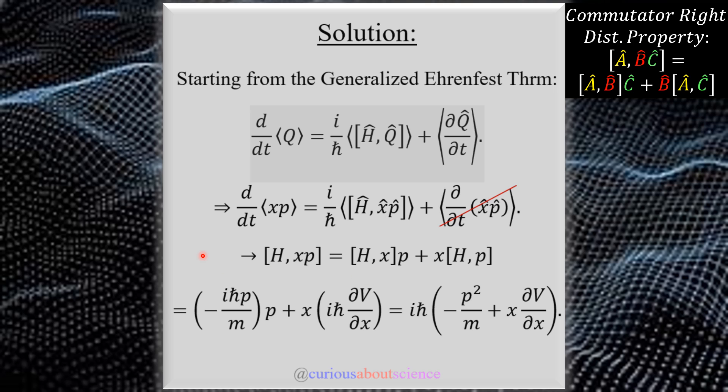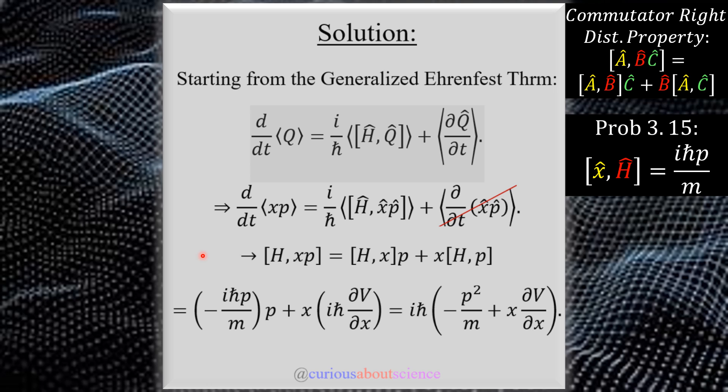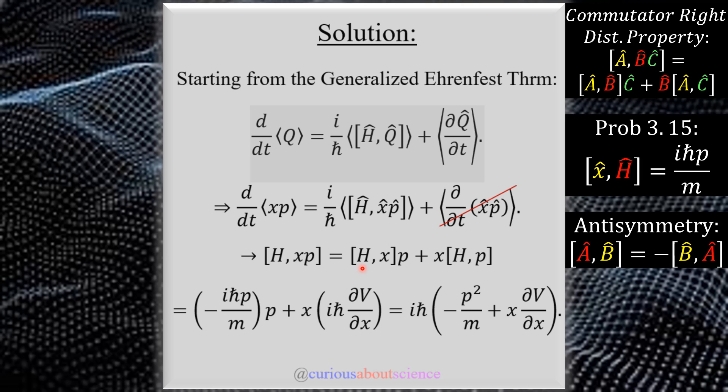And conveniently, we already solved for these quantities before. In particular, in problem 3.15, we had the expectation of x with the Hamiltonian, which gave us iℏp/m. But notice here that this is, we want what's the opposite order here. So use an antisymmetry property, and we put a negative there. And that's why we have a negative in the parentheses. Good to go there.